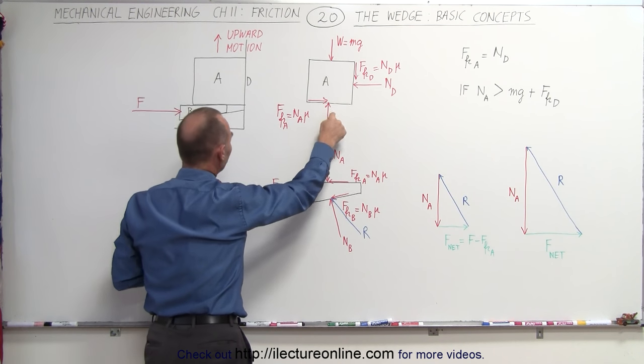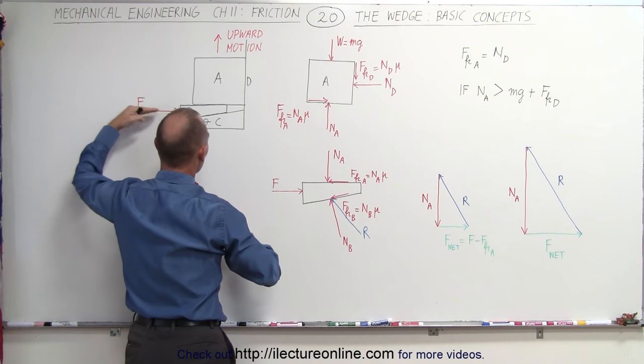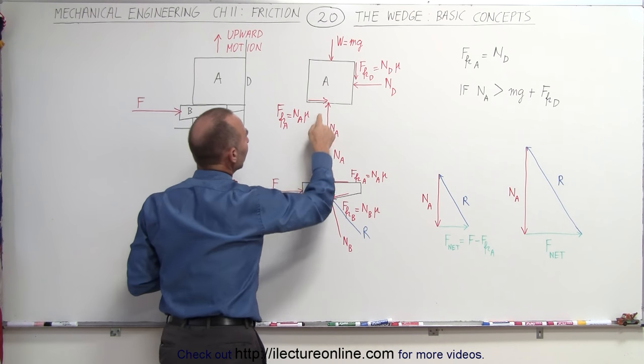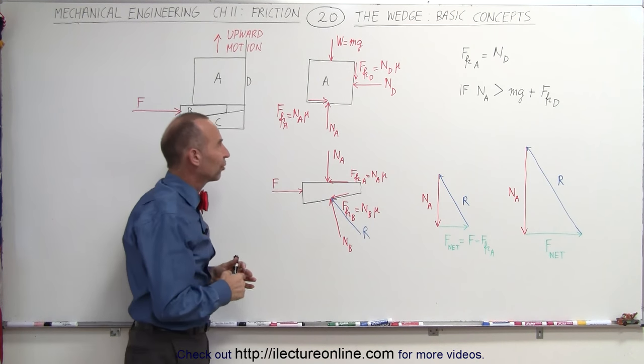Which means the upward normal force at the bottom of A, which is caused by driving the wedge in here, has to both lift up A and counterbalance the friction force at surface D.